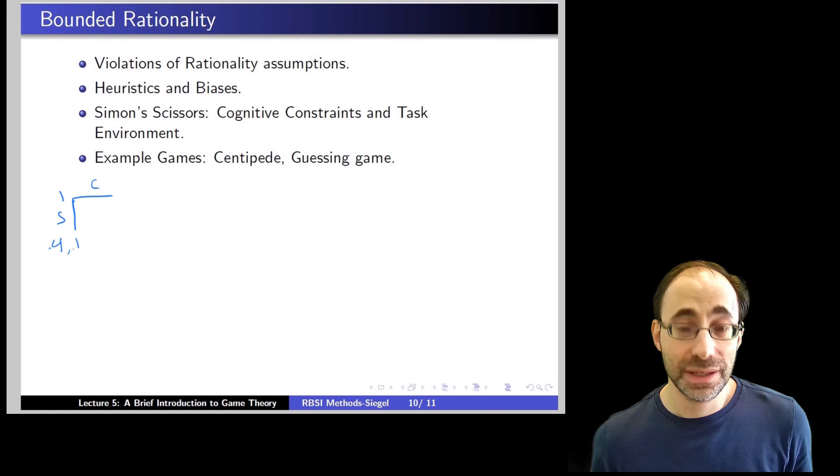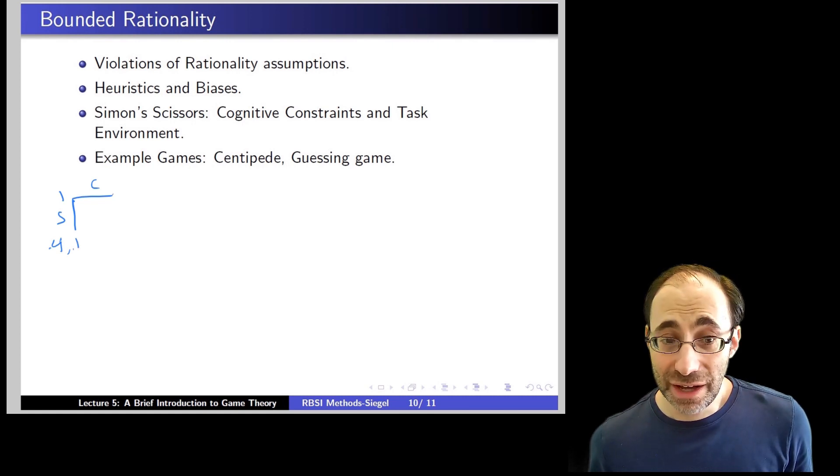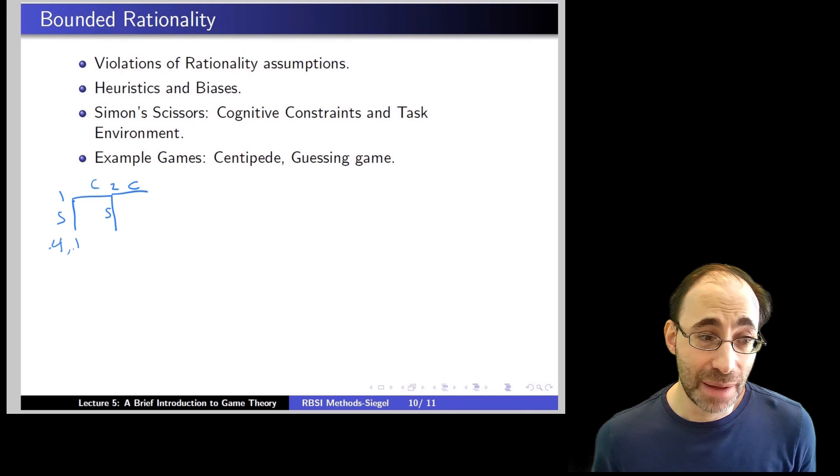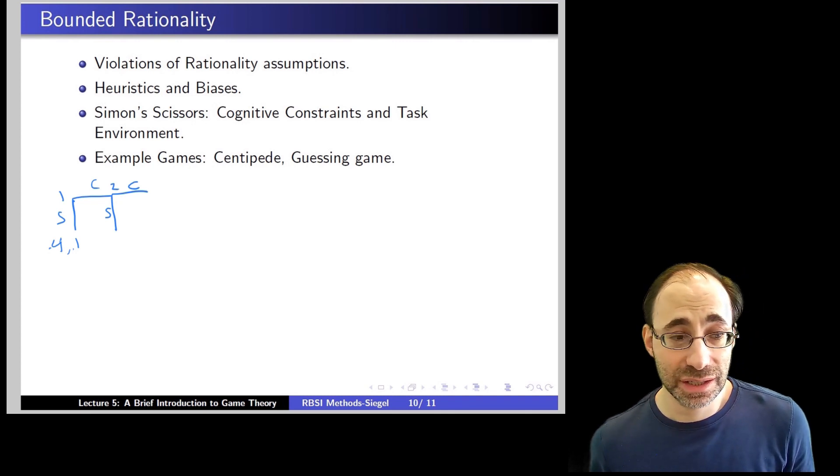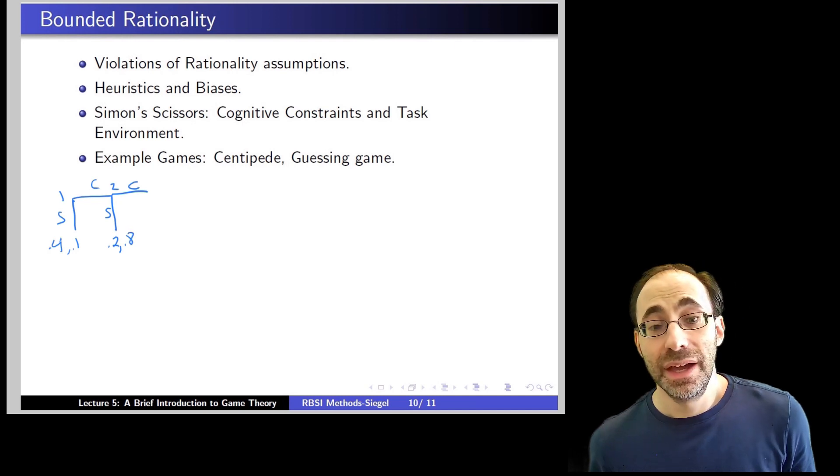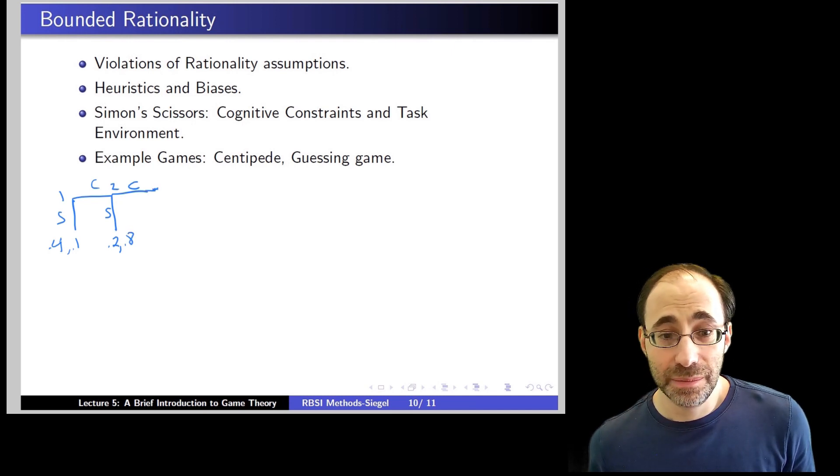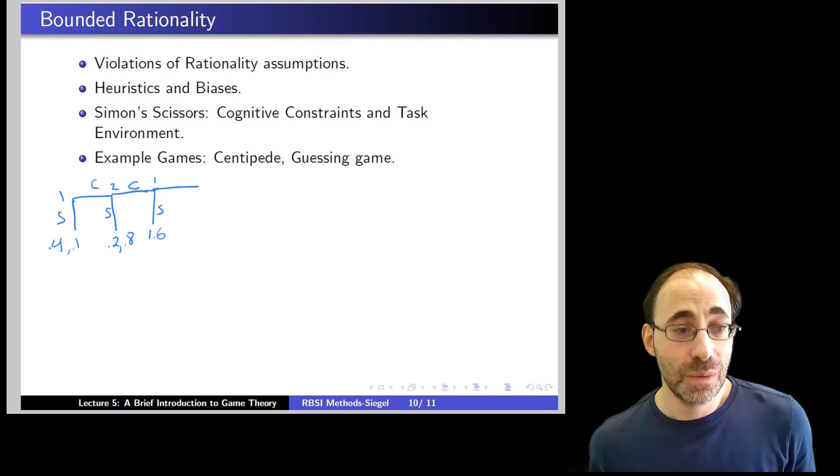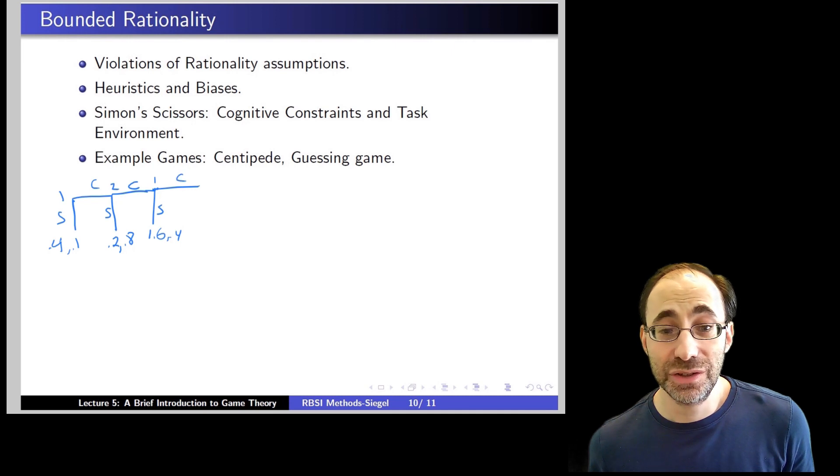If player one continues onward, then there's two options. Player two can continue or stop. If player two stops, then player one gets 20 cents, and player two gets 80 cents. If player two continues, then player one has a choice. Player one can continue or stop, and you can see where this is going. If player one stops, player one gets $1.60, whereas player two gets 40 cents.